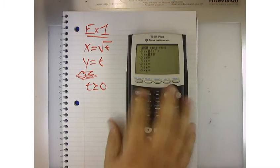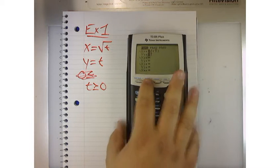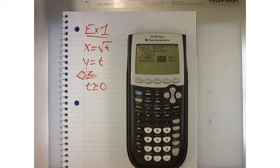So, to set that, I would hit second, table set, and I would want to start my table at zero. And then I'm going to count by one. Does that make sense?